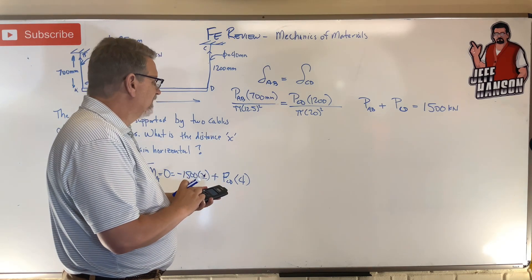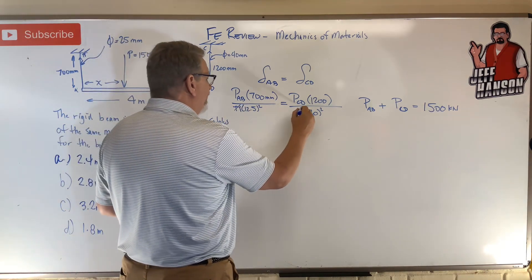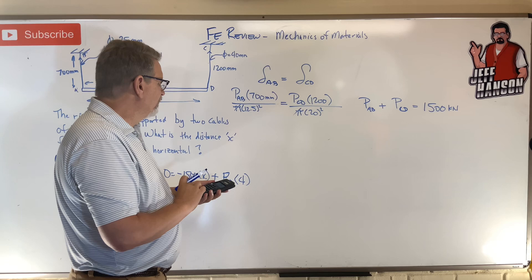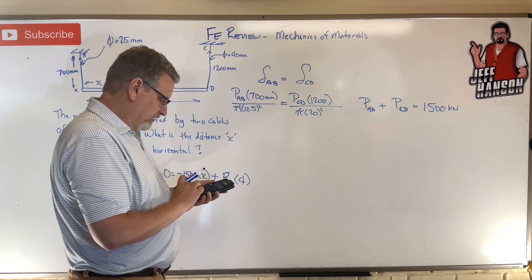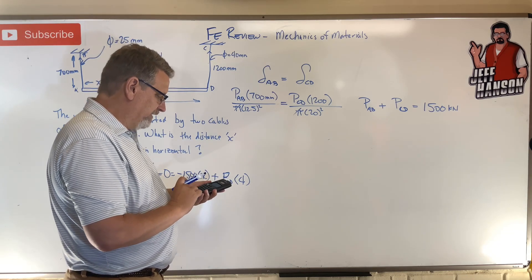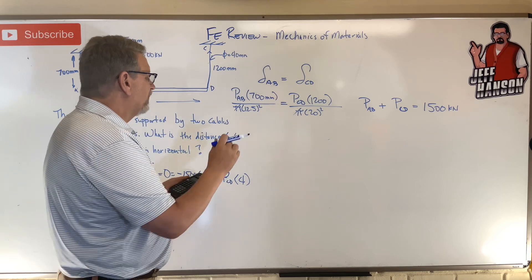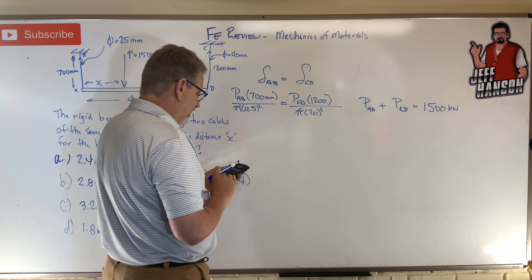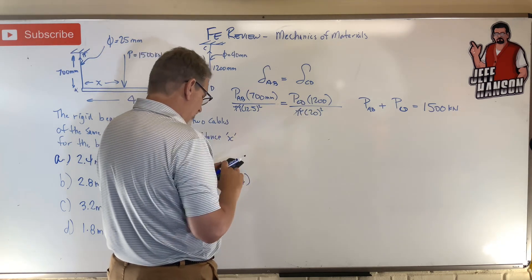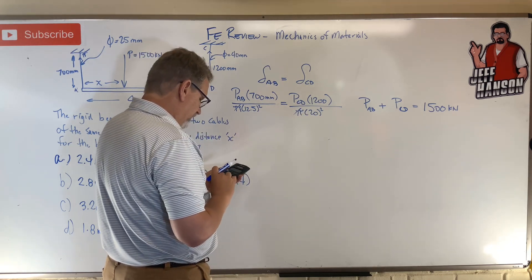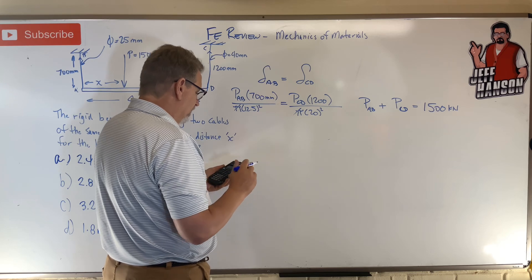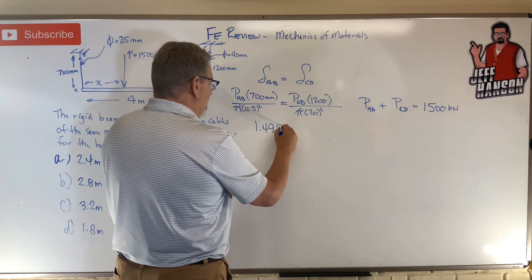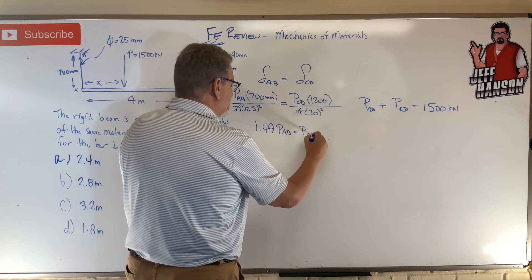Here we go. So 700 divided by 12.5 squared, and then I'm going to multiply that by 20 squared, times 20 squared, and then divide that by 1200. So 1.49 P_AB is equal to P_CD.